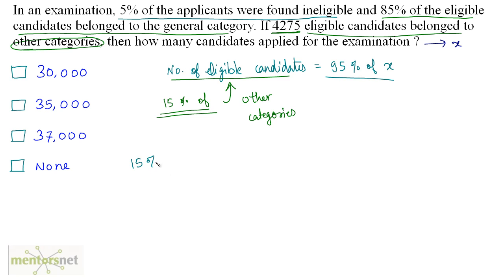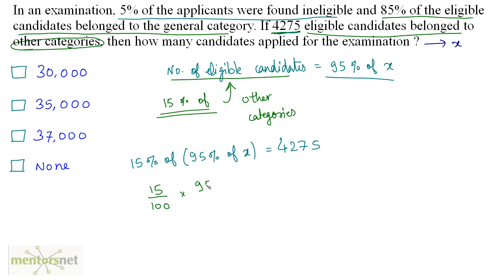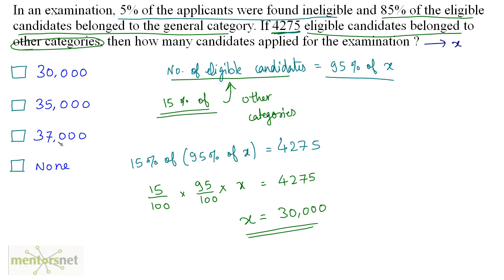So we have 15% of 95% of x equal to 4275. That means 15 by 100 times 95 by 100 times x equals 4275. Solving this gives x equal to 30,000. So the answer is option A: 30,000 candidates applied for the examination.